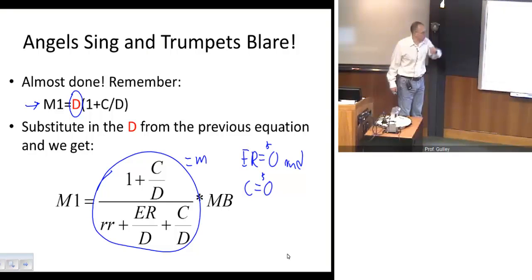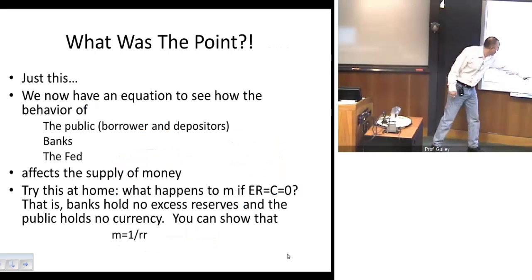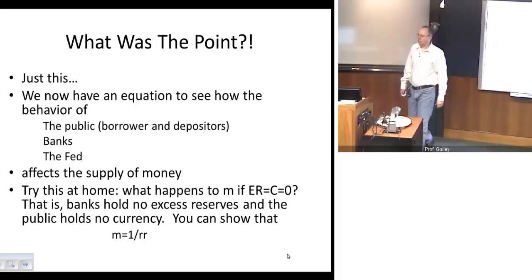What happens, this is what you want to ask yourself, what happens to the value of the money multiplier? What you want to be able to prove to yourself is that it reduces to our simple deposit expansion multiplier that we came up with earlier. And I'm done.